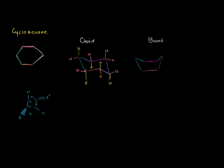I've drawn the different hydrogens coming off these carbons in different colors, and I've done it for a purpose. The ones going straight up or straight down, we call those axial hydrogens. The ones drawn in orange that are kind of going to the side, we call those equatorial hydrogens. It's useful to know these names when we talk about the different configurations — the different chair and boat shapes — because whether something is equatorial or axial can change if the ring flips.